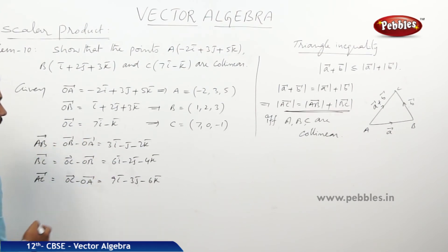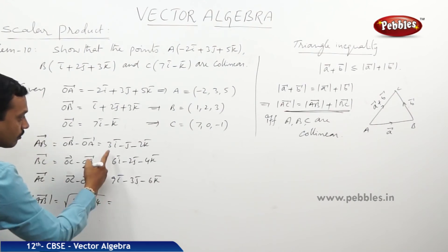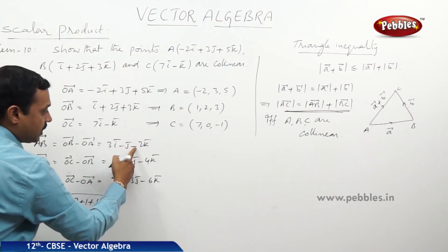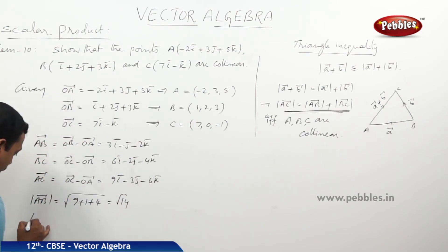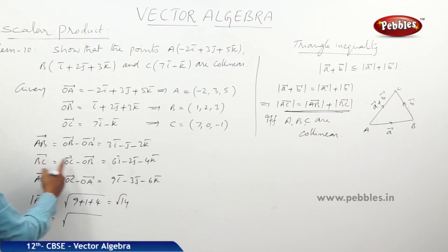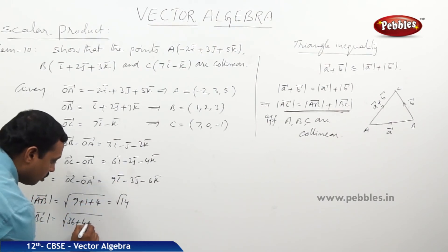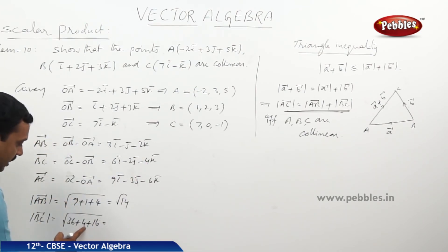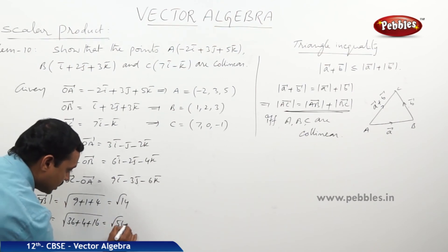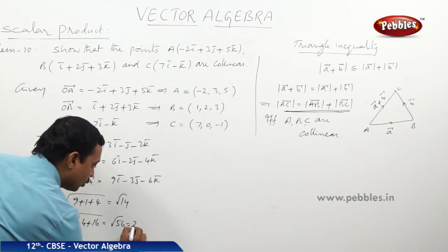Now let us find the magnitudes. |AB| = √(3² + (−1)² + (−2)²) = √(9+1+4) = √14. |BC| = √(6² + (−2)² + (−4)²) = √(36+4+16) = √56 = 2√14.